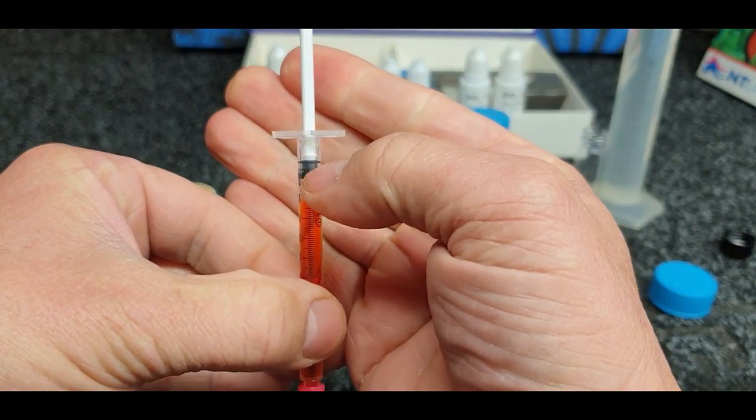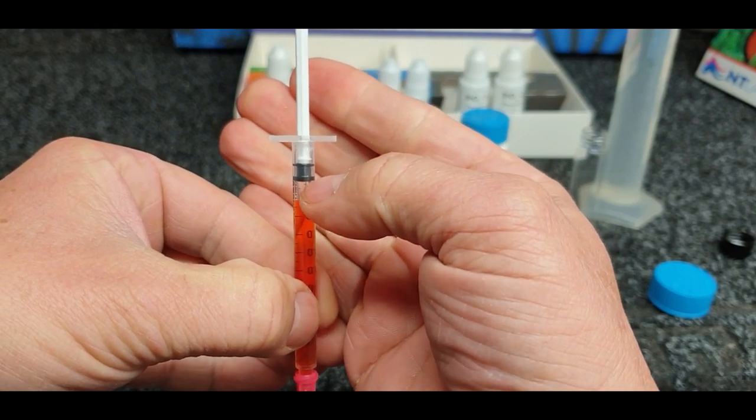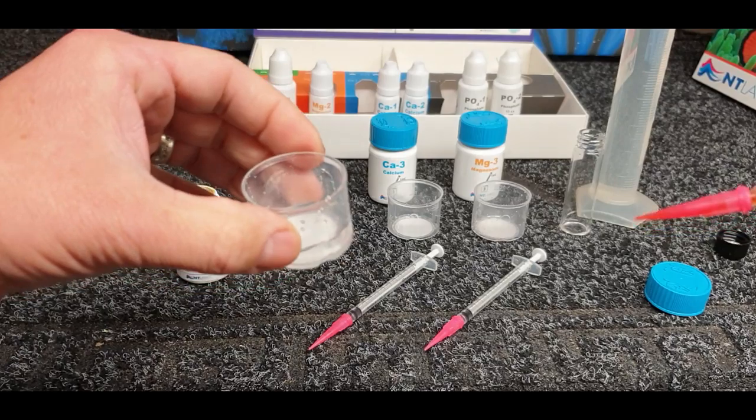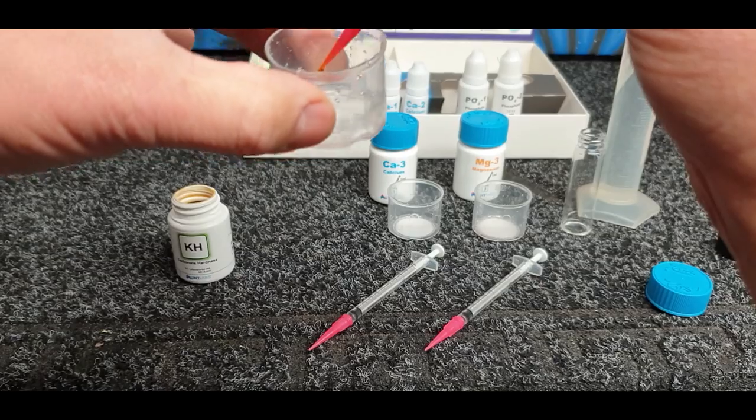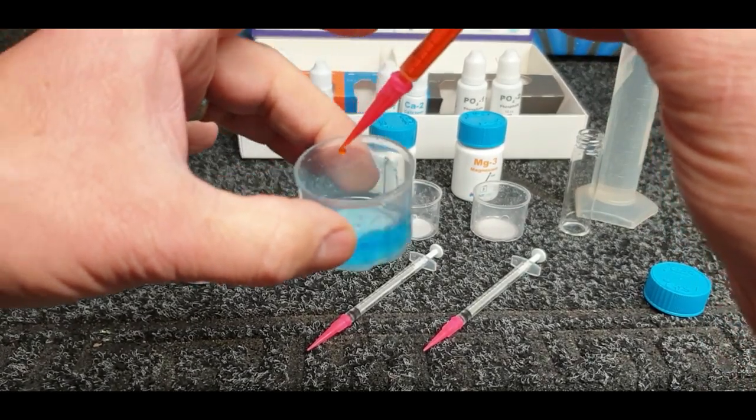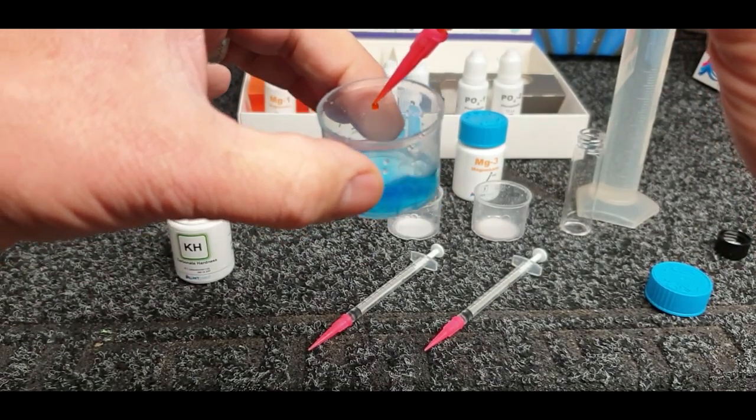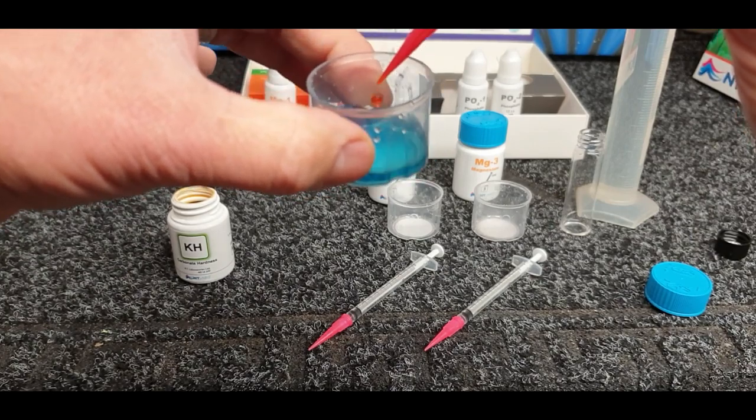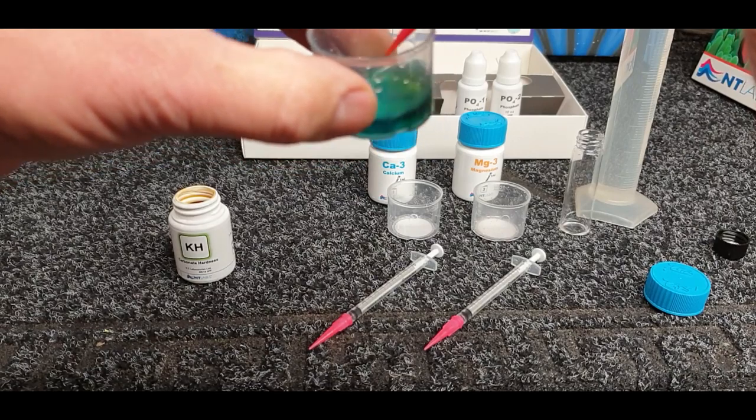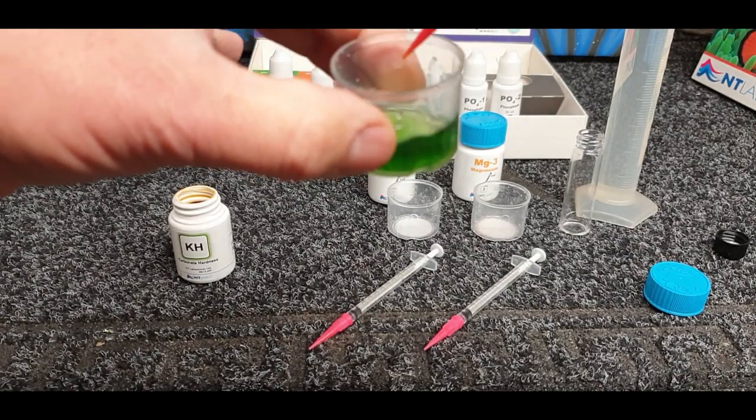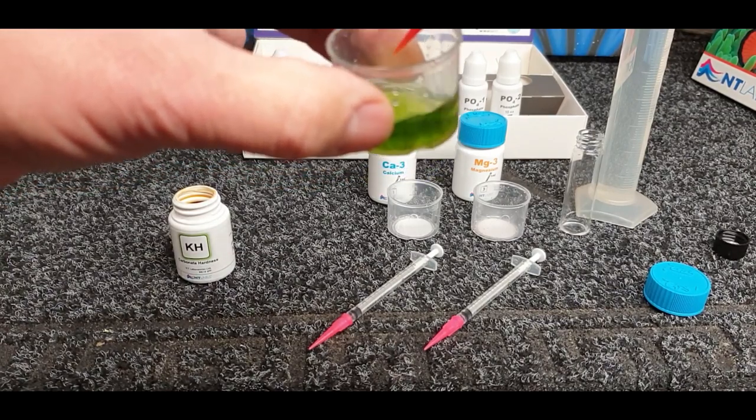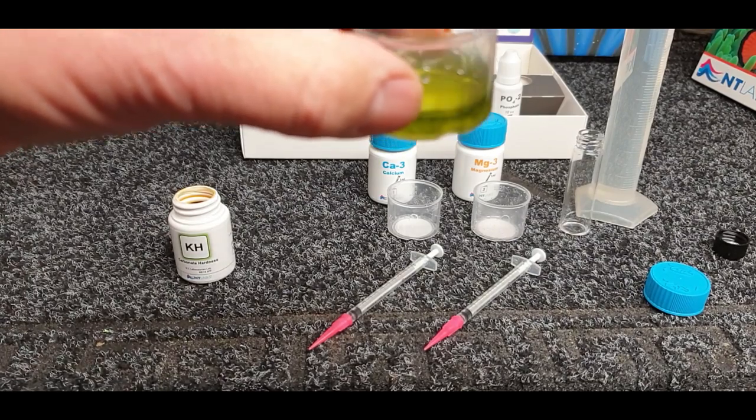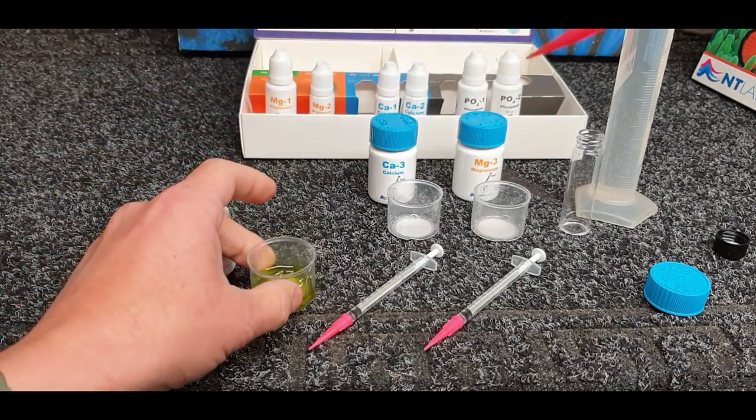You're going to get that little bubble there inside, don't worry about that, it's supposed to be like that. Don't try and fill that up, it's supposed to be there. With this test, you just give it a slow swirl and you add that reagent in a couple of drops at a time. You'll see it'll go blue and you just keep adding it until it goes green, then yellow.